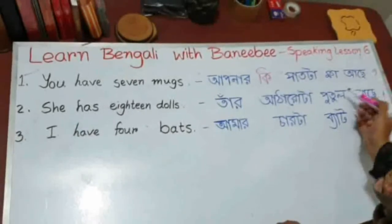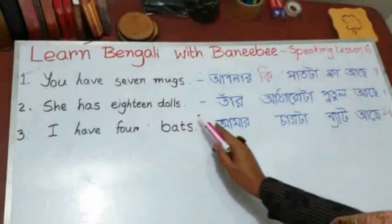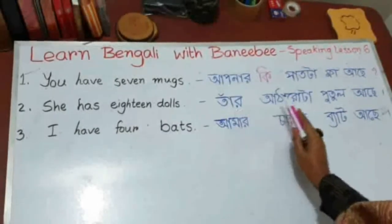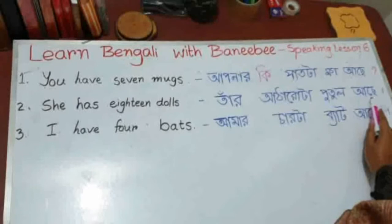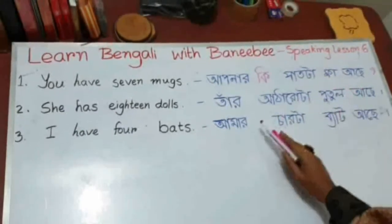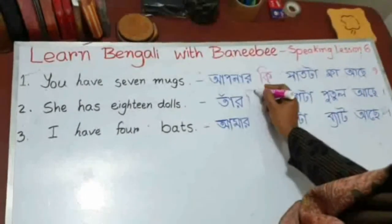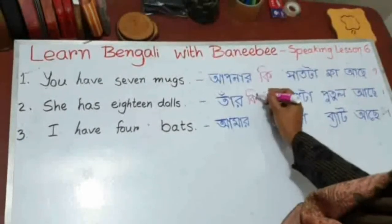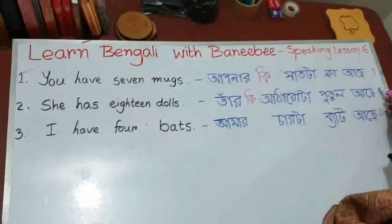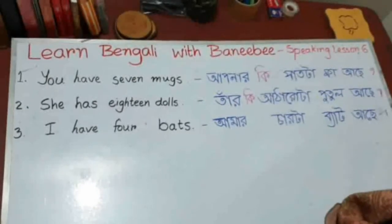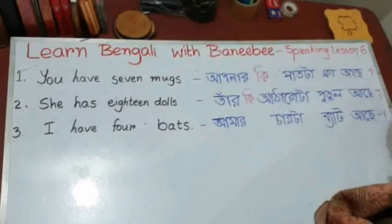Then, she has 18 dogs means 'tar aatharota putul achhe' — this is a statement. Now when I say 'tar ki aatharota putul achhe?' — hear the rising tone? 'Tar aatharota putul achhe' — see the rising tone.